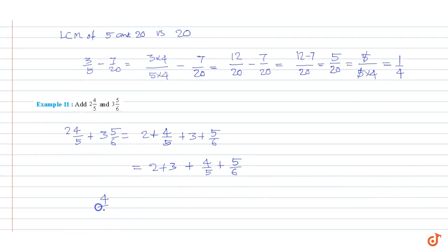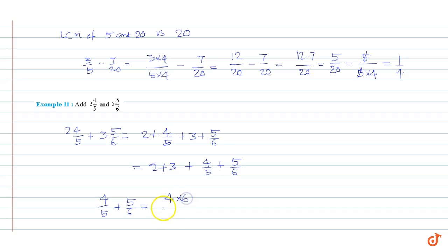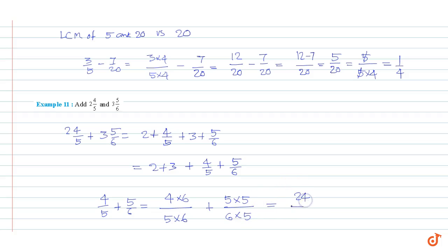Now 4/5 plus 5/6: the LCM of 5 and 6 is 30, so we can write 4 into 6 divided by 5 into 6, plus 5 into 5 divided by 6 into 5. This equals 24/30 plus 25/30.